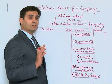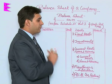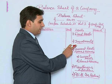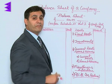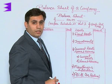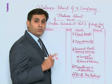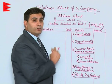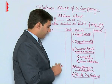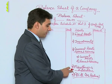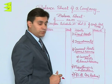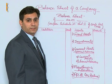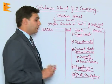So on the asset side we have five major headings: first, fixed assets; second, investments; third, current assets loans and advances (with two subheadings — current assets and loans and advances); fourth, miscellaneous expenditure; and fifth, profit and loss account debit balance. Now coming to the liability side.